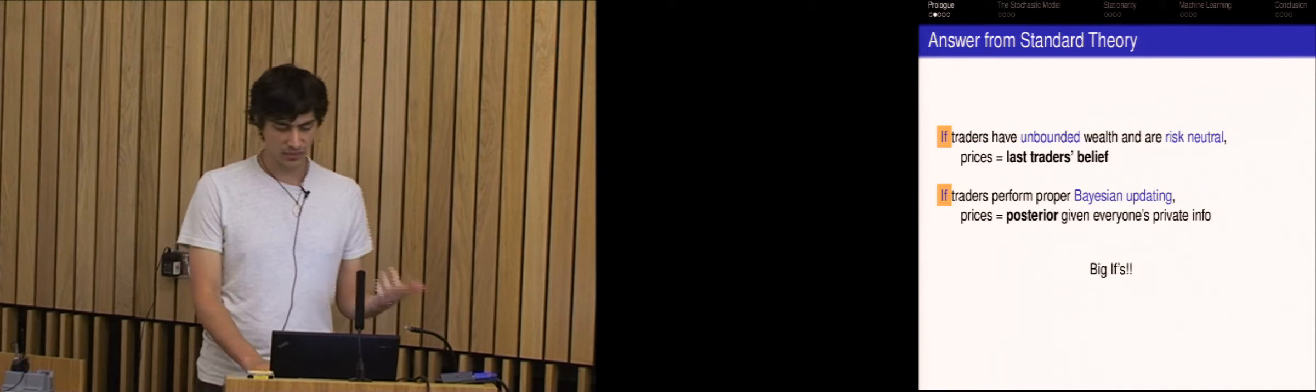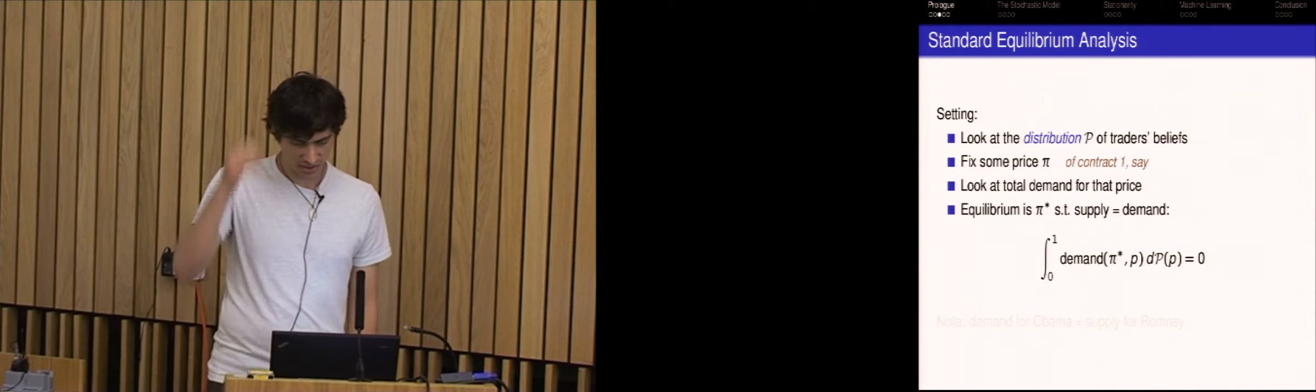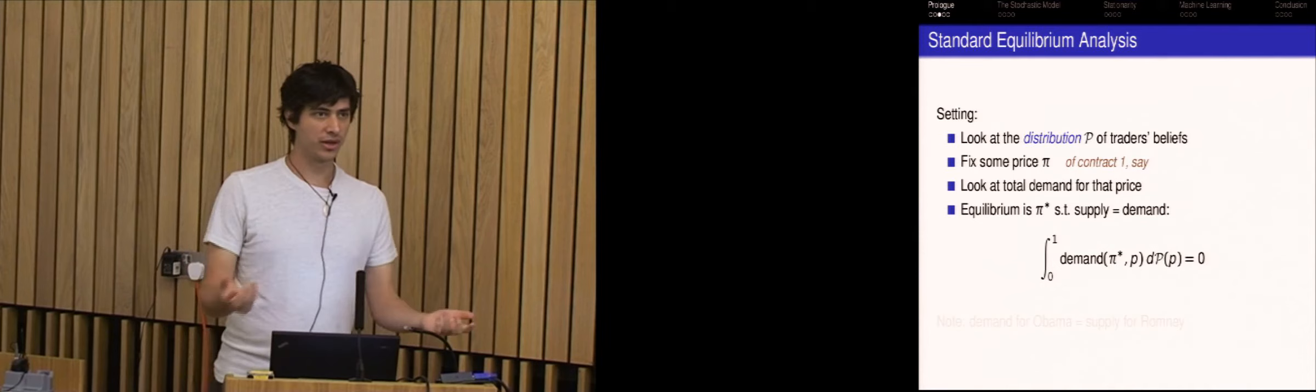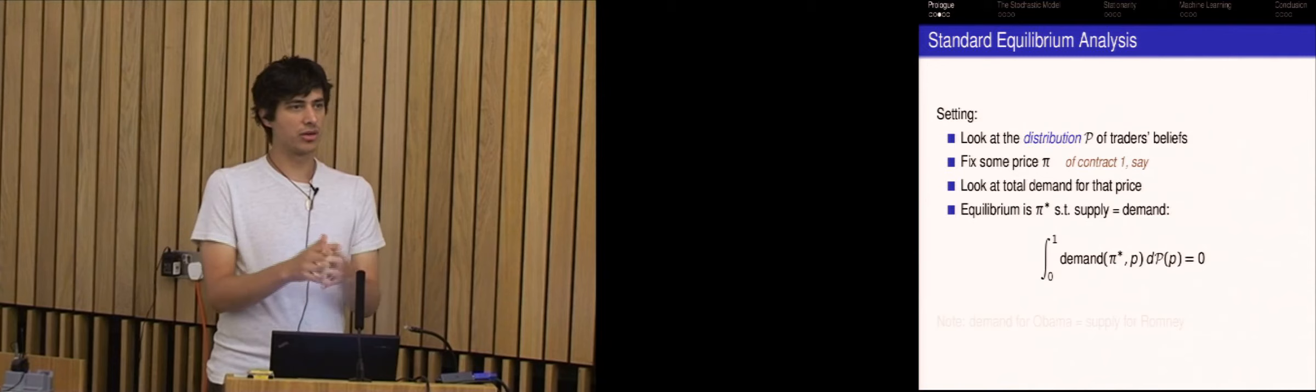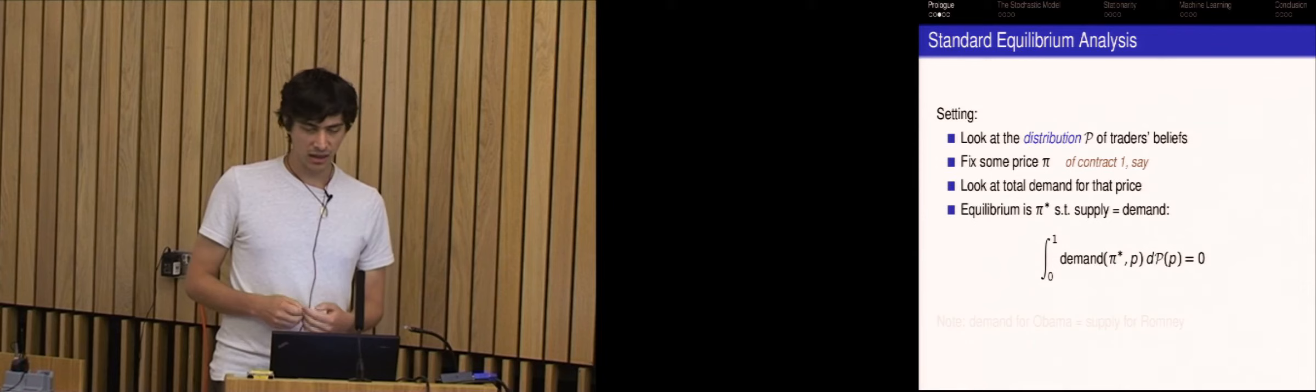Not only obviously unbounded wealth, but risk neutrality is also not really observed in betting that much. And it's very debatable whether Bayesian updating is even possible. So it's not quite satisfying. So there's this other bit of work that looks at the standard equilibrium analysis, which Adrian mentioned in his talk. So in this setting, they looked at a distribution of traders' beliefs. I'll just use the running example of a binary market. So suppose you had some distribution over the beliefs that Obama was going to win in the election. So it's some distribution between zero and one.